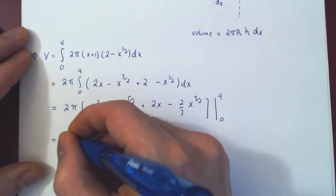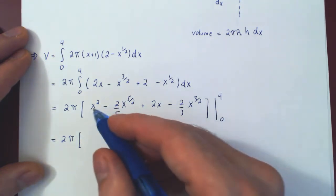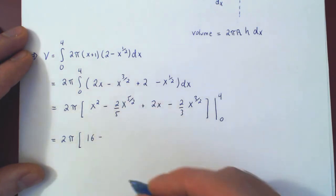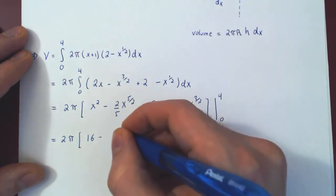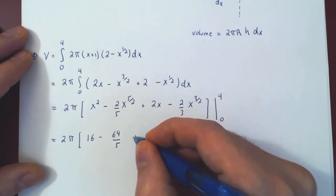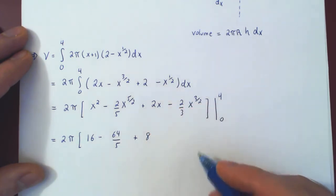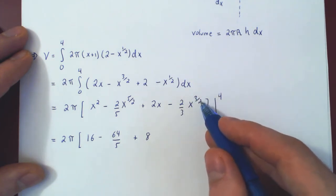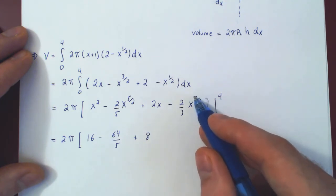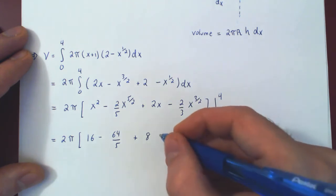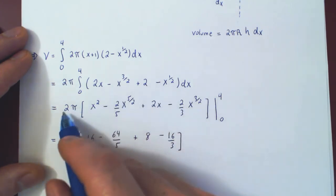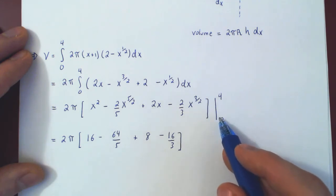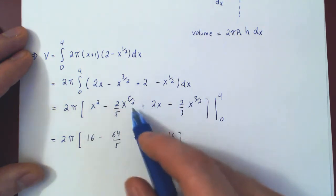We get 2 pi times the antiderivative evaluated from 0 to 4. Replacing x by 4: 4 squared is 16, minus 4 to the 5/2 — square root of 4 is 2, 2 to the 5 is 32, times 2 over 5 gives 64 over 5 — plus 2 times 4 is 8, minus 4 to the 3/2 — square root of 4 is 2, 2 cubed is 8, times 2/3 gives 16 over 3. When x equals 0, everything vanishes, so we subtract nothing.